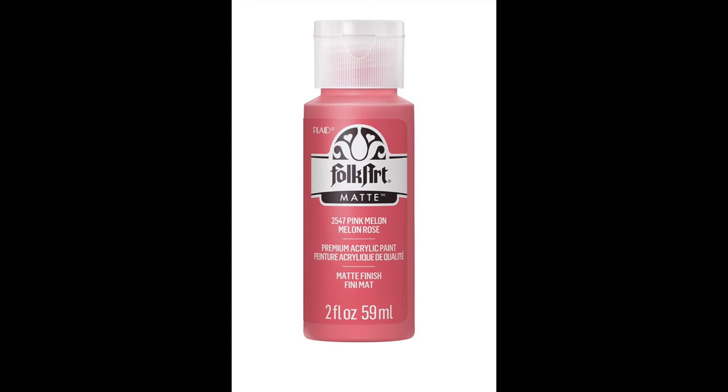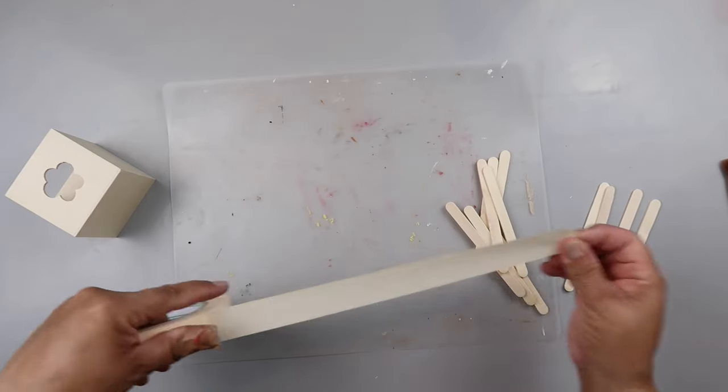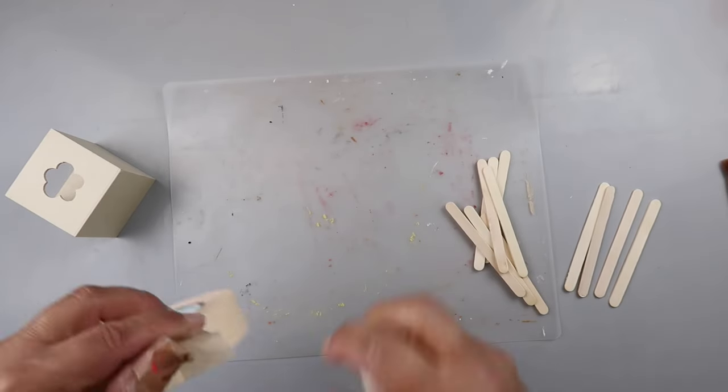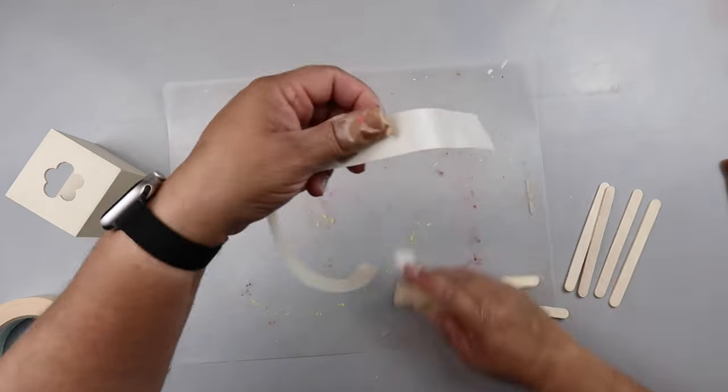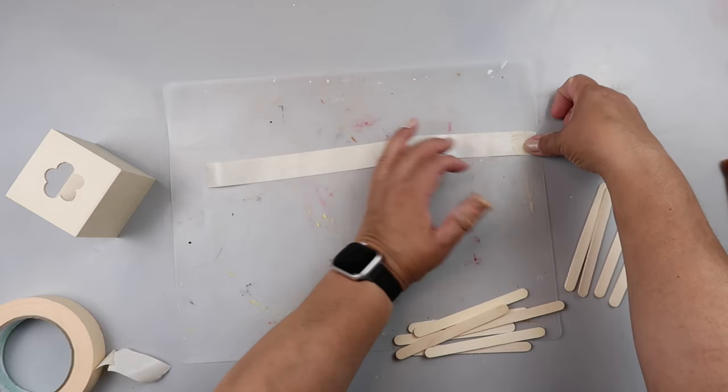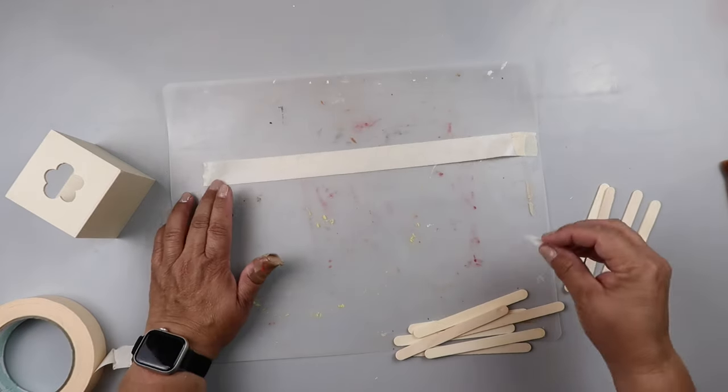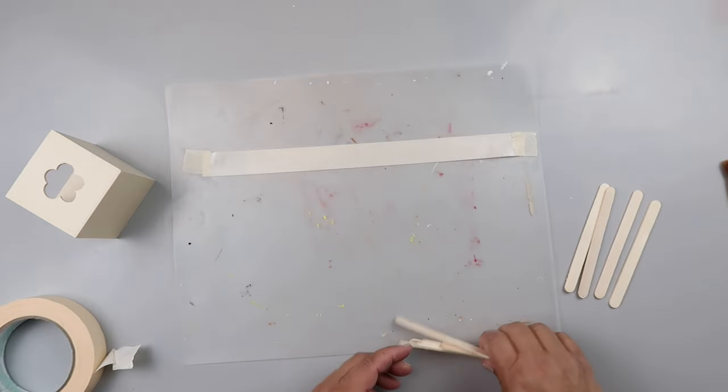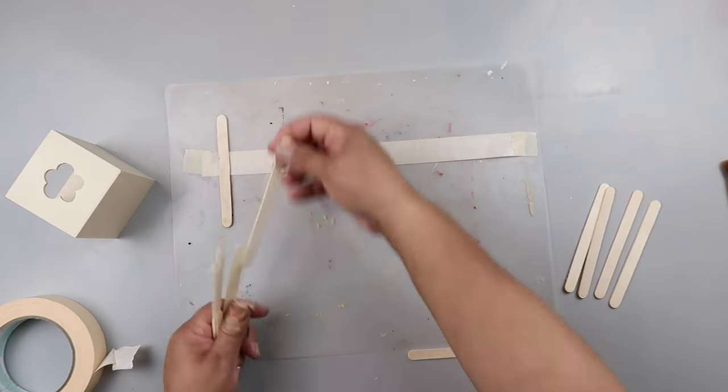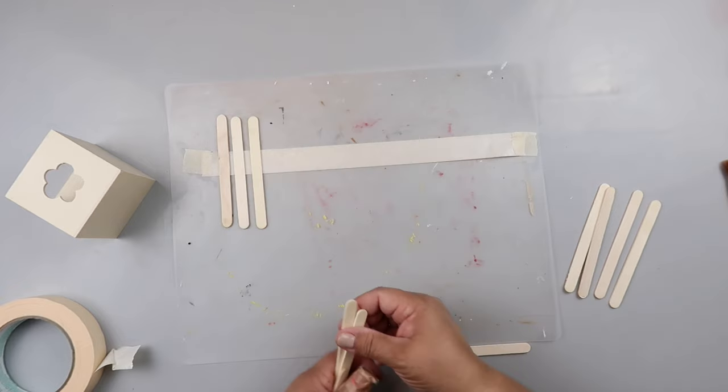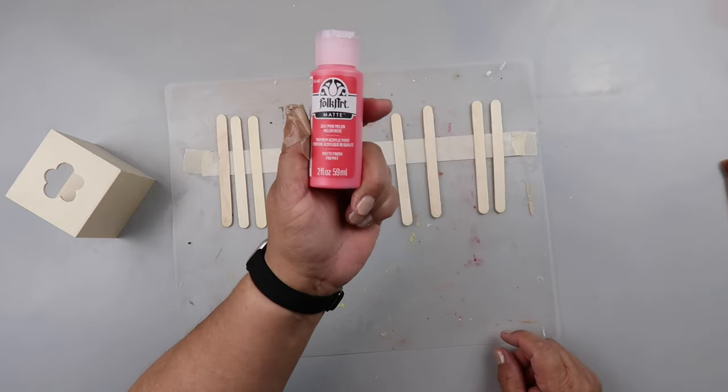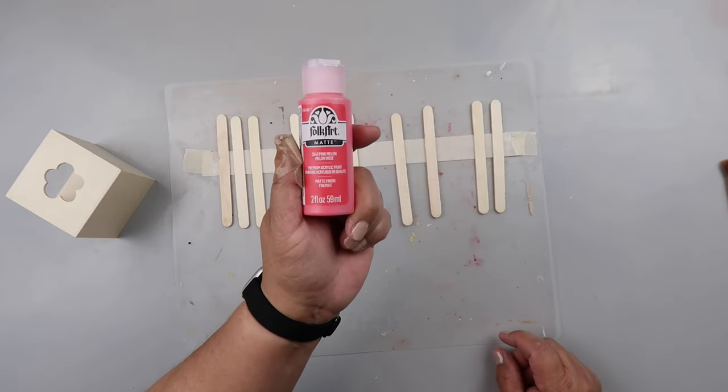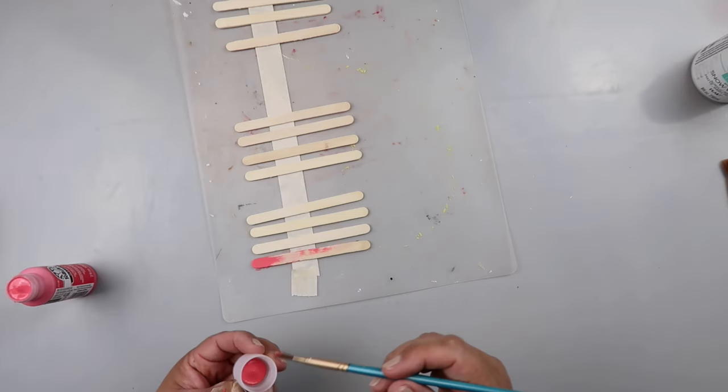The star of today's show is this pink melon color paint from FolkArt, and I'm going to kick off with a little crafting hack. If you're trying to paint little beads or craft sticks or popsicle sticks, an easy way to keep them in place while painting is to put a piece of masking tape sticky side up, then put a little piece of tape on each end to secure it down. Then you just place your craft sticks or beads right on top and it holds them in place. We're going to take that really pretty pink melon color and start painting.